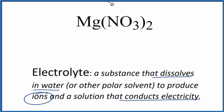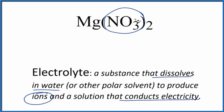So if it dissolves — if it's soluble — it'll produce ions. If you know your solubility rules, compounds that have nitrates in them are very soluble. So when we put this in water, it'll dissolve and dissociate into its ions.